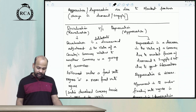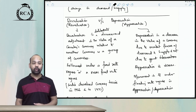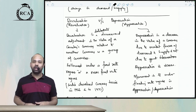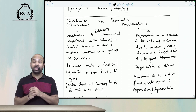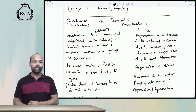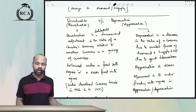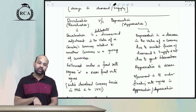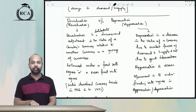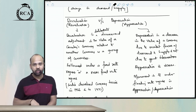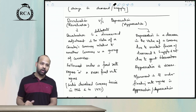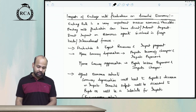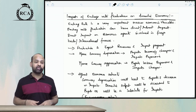Devaluation versus depreciation: devaluation is a deliberate attempt made by the government to decrease the value of their currency in relation to another currency or basket of currencies, usually done under a fixed rate regime. Appreciation or depreciation, on the other hand, is due to market forces of demand and supply and not due to government intervention.